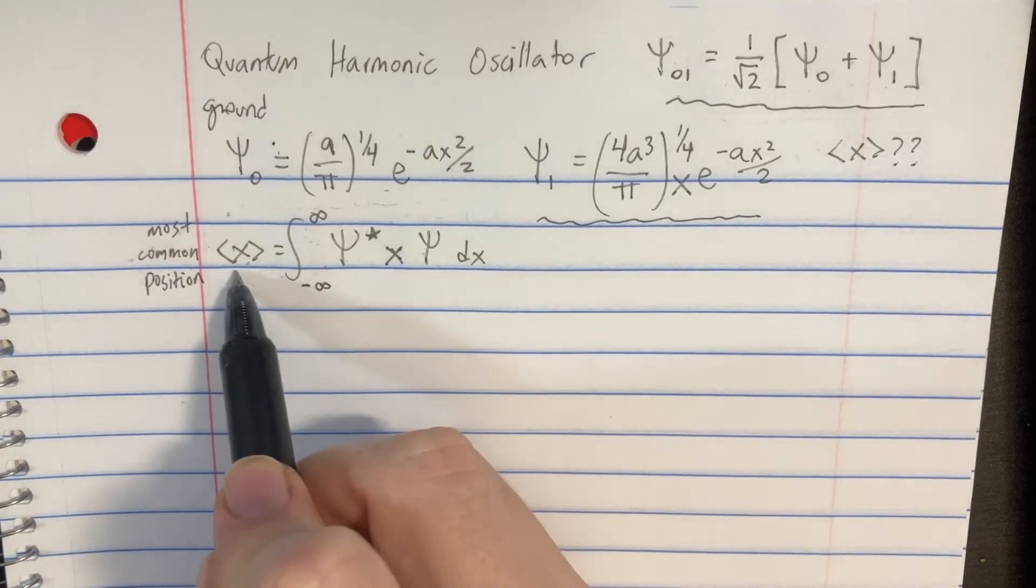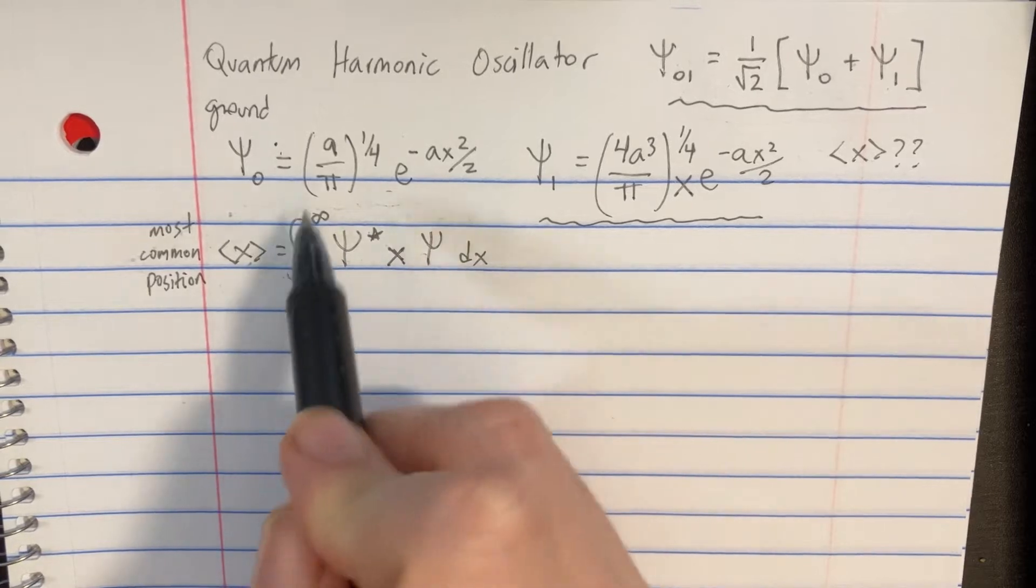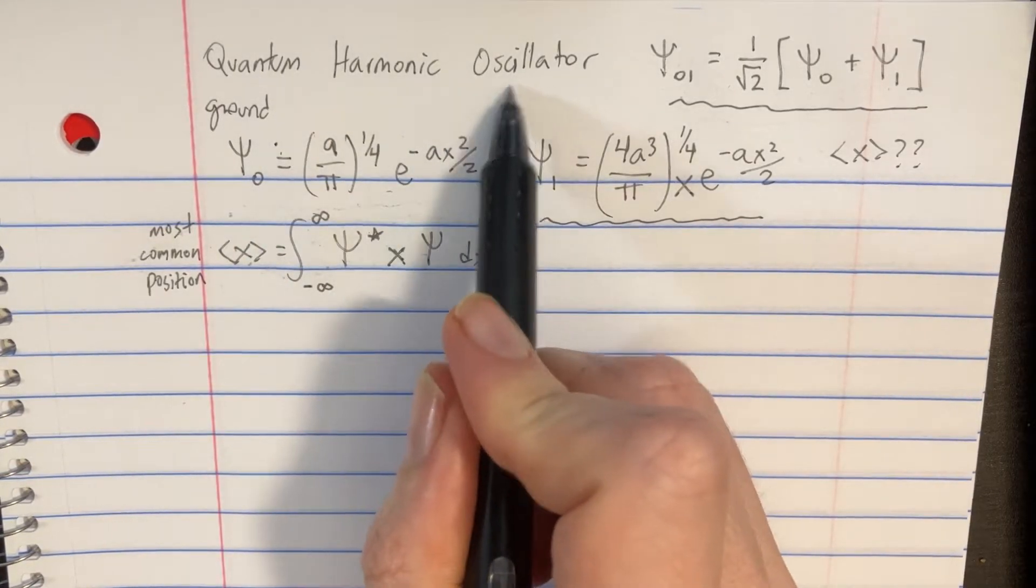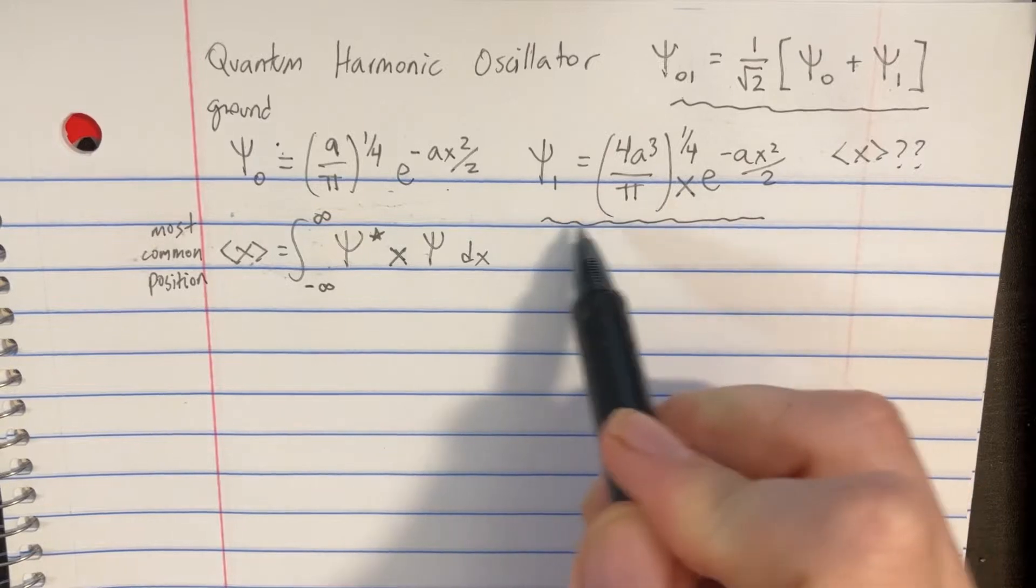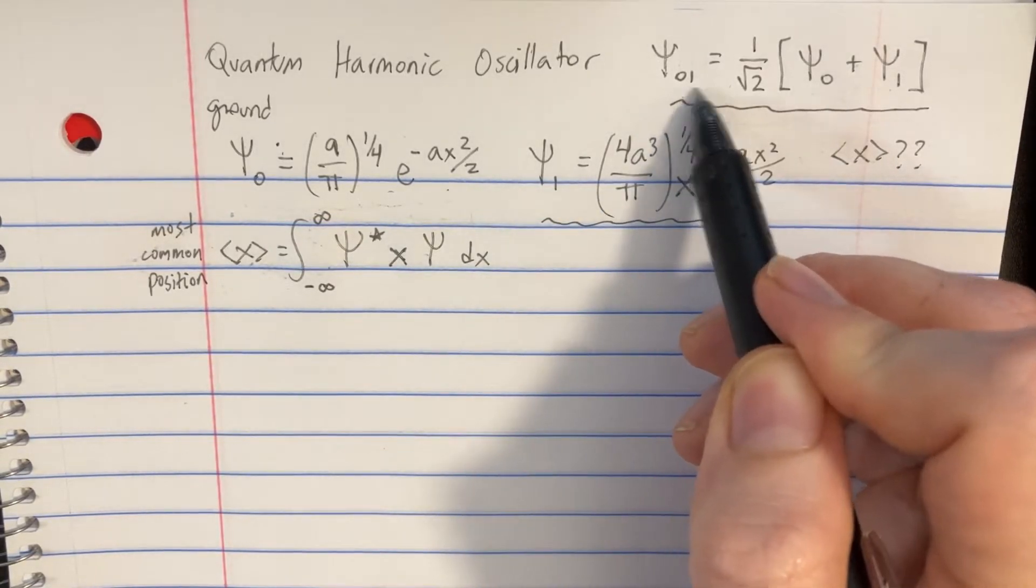We're trying to calculate the expectation value, which is the most common position of a particle if it's in a quantum harmonic oscillator, in either the ground state, or the first state, or a superposition of both of the two states.